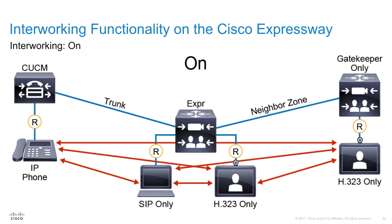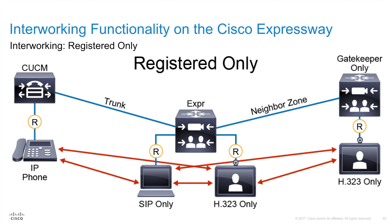What's significant about this is that my SIP endpoint on the CUCM can call my H.323 endpoint on the gatekeeper, even though neither one is registered to the Expressway — that's interworking set to on. However, if I set interworking to registered only, I lose that ability. With registered only, the endpoint on the CUCM can no longer call the endpoint on the gatekeeper because neither is registered to the Expressway. With registered only, at least one of the endpoints involved in the call must be registered to the Expressway for the call to work. My H.323 endpoint registered to the Expressway can call my SIP endpoint on the CUCM because at least one of them is registered. But my SIP endpoint on the CUCM cannot call my H.323 endpoint on the gatekeeper because neither one is registered to the Expressway.